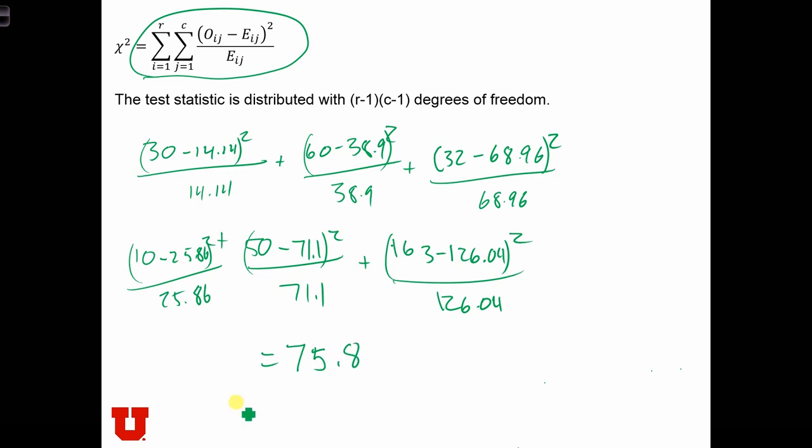Recall that the degrees of freedom that we had was R minus 1 times C minus 1, which is 2 minus 1, two rows. So 1 times 3 minus 1 times 2, so equals 2 degrees of freedom.